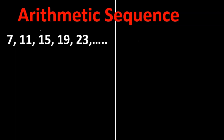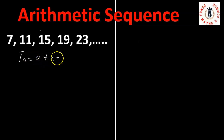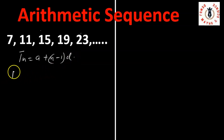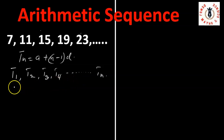Welcome to another math lesson. In this lesson we use a sequence to understand arithmetic sequences and also how to derive the formula for arithmetic progression. The formula for arithmetic progression is: tn equals a plus n minus 1 into d. For an arithmetic series we have t1, t2, t3, t4, and it continues up to the last term tn, which can be a very long term.